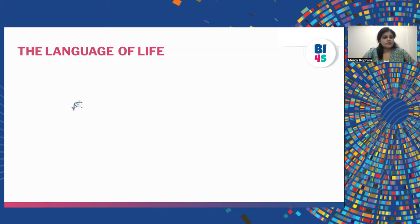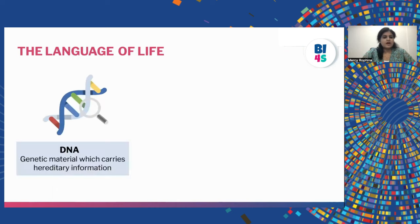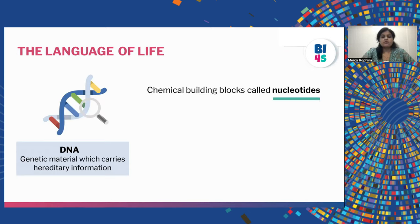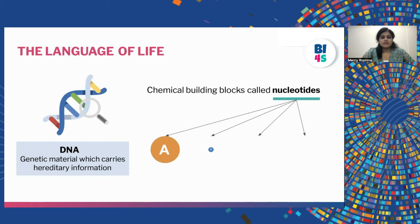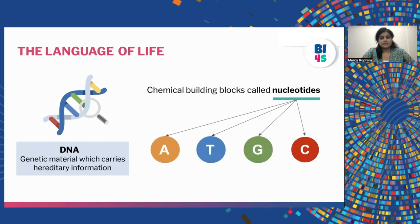We know that DNA is our genetic material which carries the hereditary information from one generation and passes it on to the next generation. This DNA is made up of some organic molecules which we call nucleotides. There are four major nucleotides: A, which is adenine; T, thymine; G, guanine; and finally C, which is cytosine.